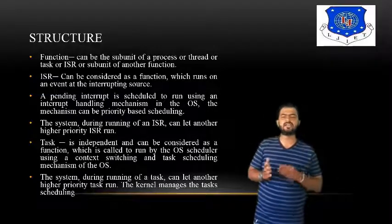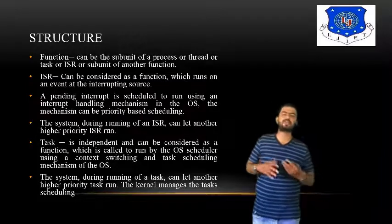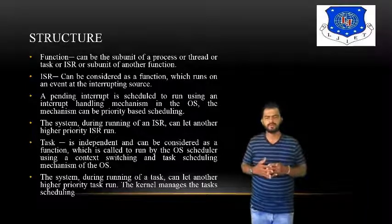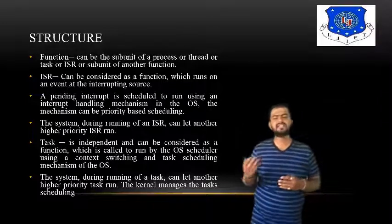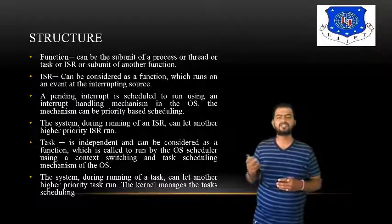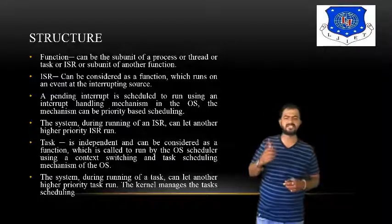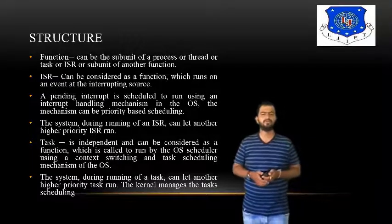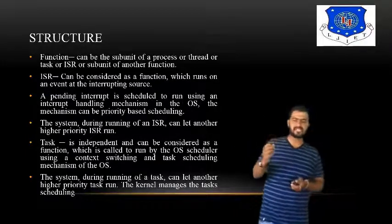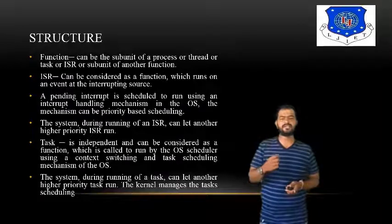During the running of an ISR, a higher-priority ISR can preempt it, since priority determines which ISR mode is chosen. A task is independent and can be considered a function called to run by the OS scheduler using context switching and the task scheduling mechanism of the OS. During task execution, a higher-priority task can preempt it — the kernel manages task scheduling.